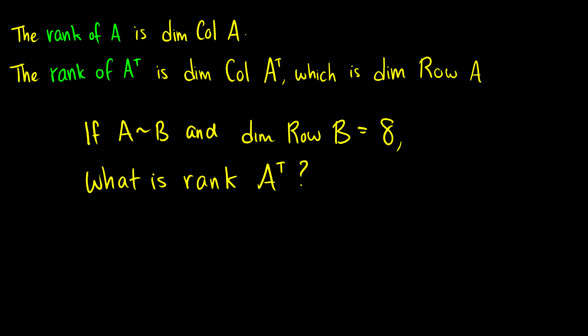We can now introduce the concept of rank. The rank of A is just the dimension of the column space of A. The rank of A transpose can be written as the dimension of the column space of A transpose, which is really just the dimension of the row space. So if we're looking at the rank of A, we want the column space; if we're looking at the rank of A transpose, we want the row space.